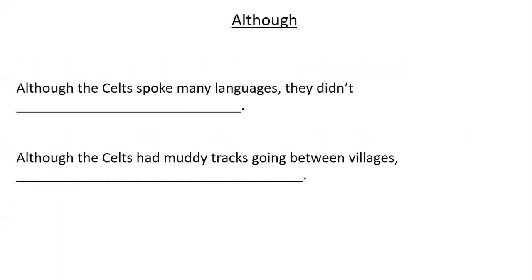Now we're going to look at 'although.' Although is used for two contrasting things — for example, 'Although it was raining, we all went out for playtime anyway.' It's something that you'd think would have changed things, but it happened anyway. So: 'Although the Celts spoke many languages, they didn't...' — what didn't they have? And: 'Although the Celts had muddy tracks going between villages...' — what did the Romans come in and do? Pause the video.